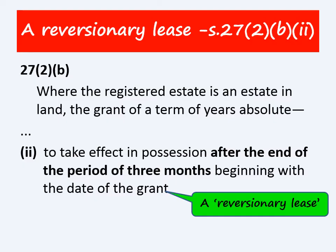The second type of lease under subsection 2(b) is a reversion lease — a lease granted to take effect at some point in the future. If the lease is to take effect more than three months after the date of grant, then that lease is a registrable disposition, and it doesn't matter how long that lease is for.